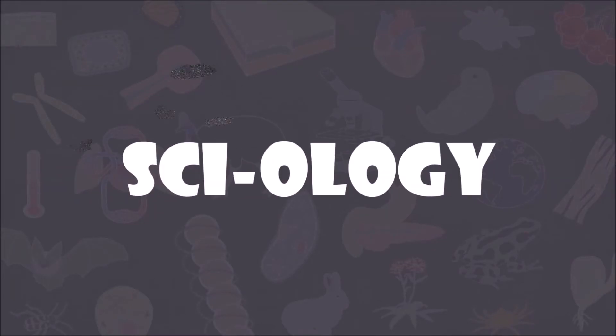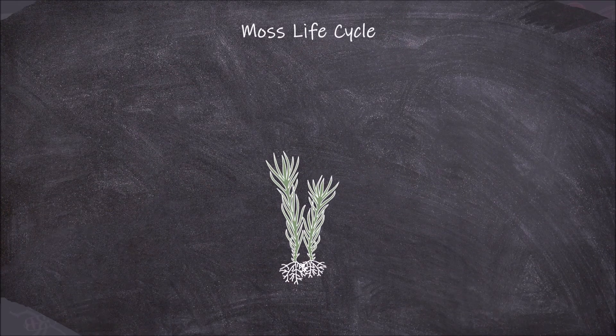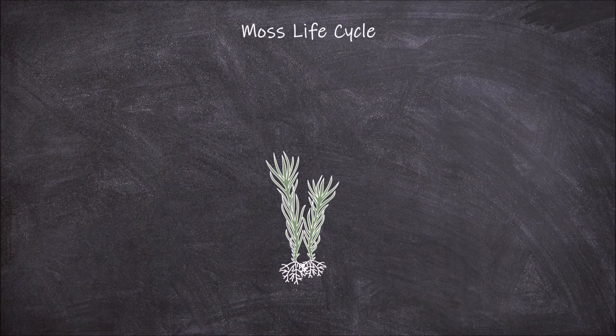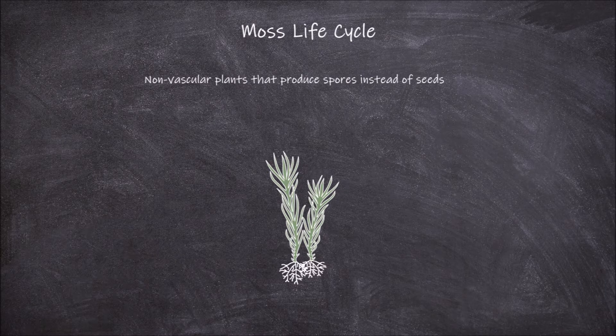Welcome back to my channel. In today's video we're going to be going over the life cycle of moss as an example of a bryophyte life cycle. Mosses are a group of small plants that all lack vascularization and produce spores instead of seeds.